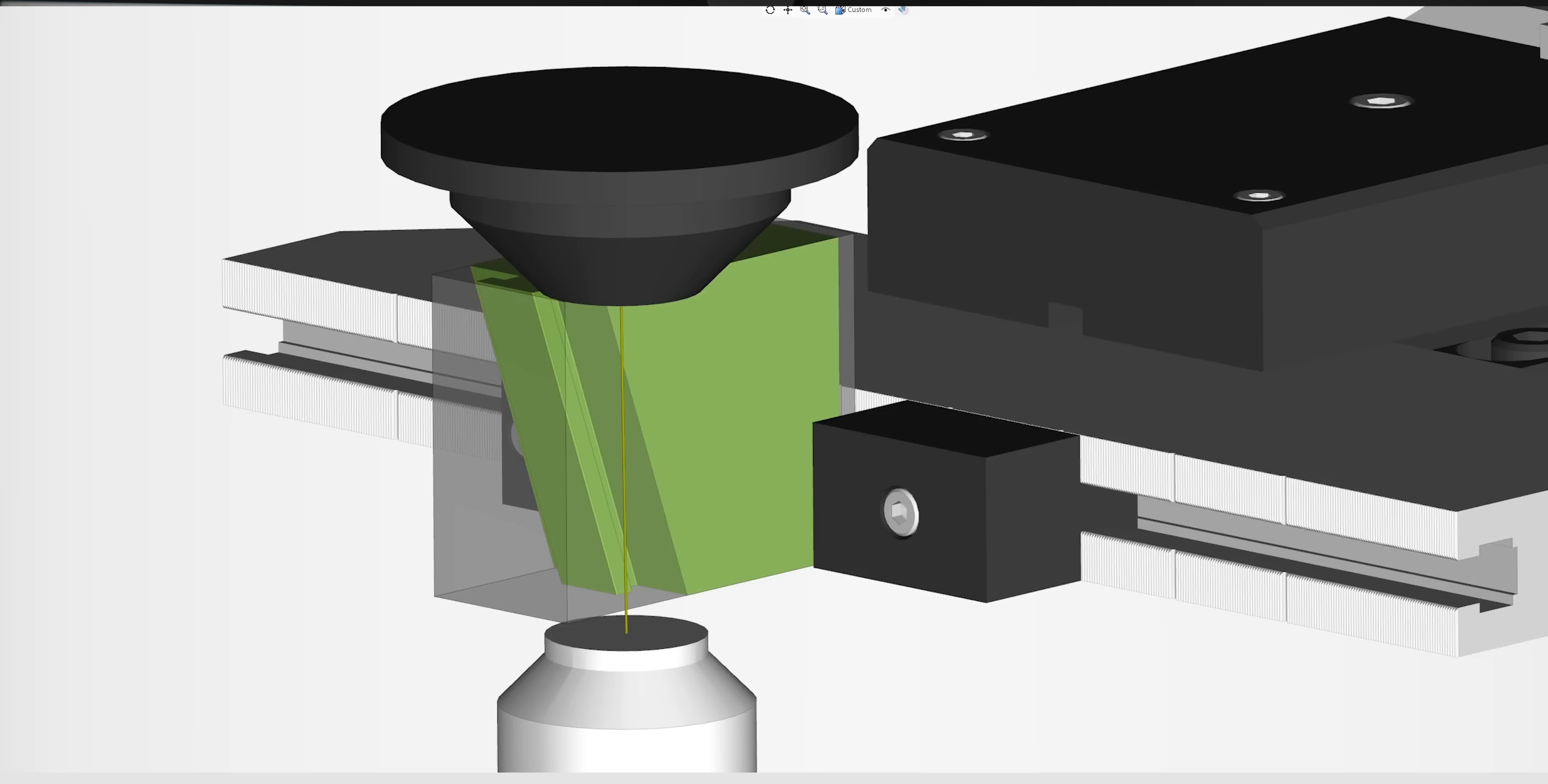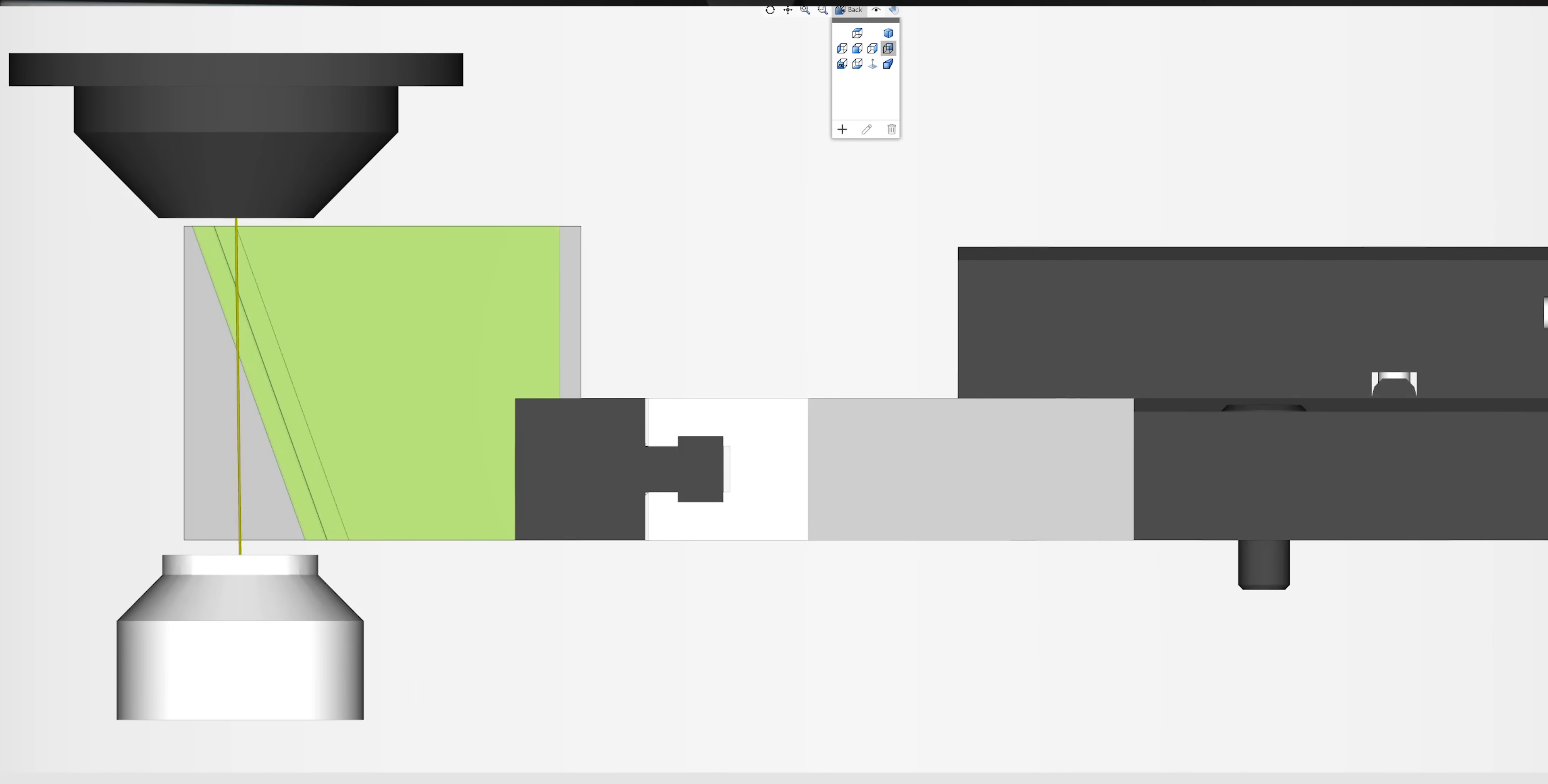Now if we go into our simulation you'll actually see that our wire actually starts vertical and then it's going to tilt at our 20 degree angle and then it's going to cut right through all the features that we want on our program.